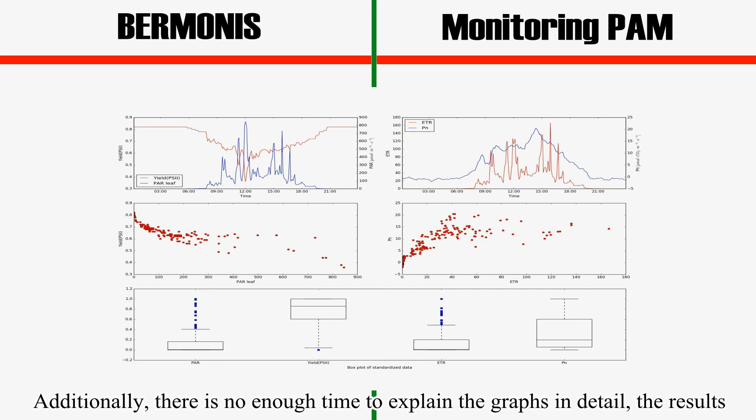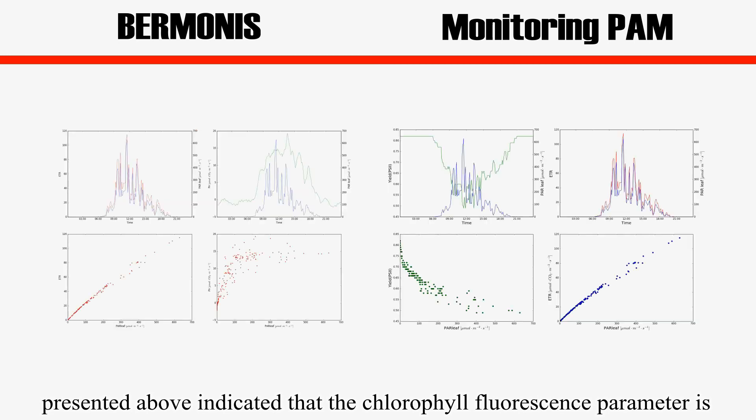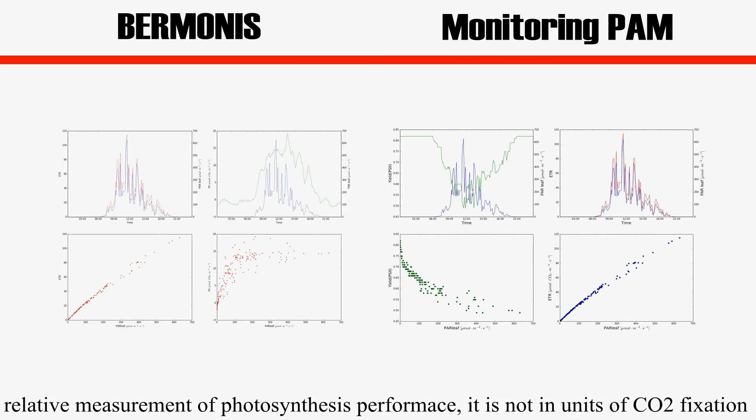Additionally, there's not enough time to explain the graphs in detail. The results presented above indicated the chlorophyll fluorescence parameter is a relative measurement of photosynthesis performance. It's not in units of CO2 assimilation. Hope this video can help you understand these two instruments. Thank you for your attention.